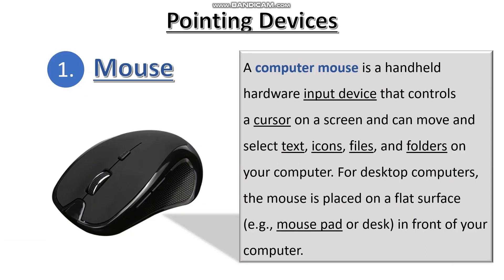Now we are going to discuss pointing devices. There are two kinds. First is the mouse. A computer mouse is a handheld hardware input device that controls a cursor on a screen and can move and select text, icons, files and folders on your computer. For desktop computers, the mouse is placed on a flat surface called a mouse pad. These days we also have wireless mouse, as you can see in this picture.